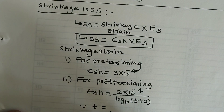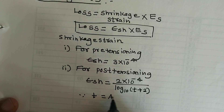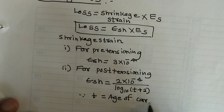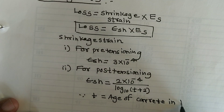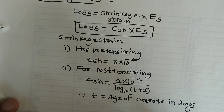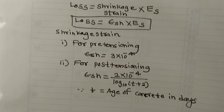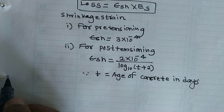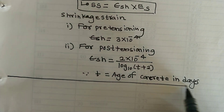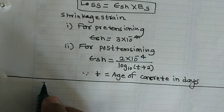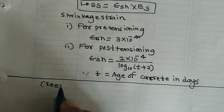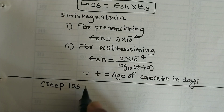In that formula, t is equal to the age of concrete in days. Next is creep loss.